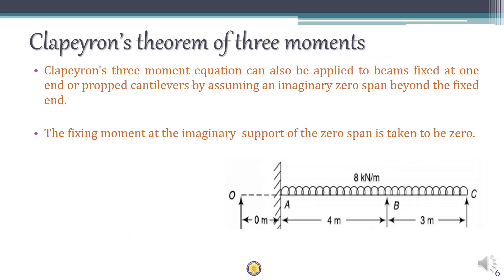It is important to note that Clapeyron's theorem of three moments can also be applied to fixed beams or propped cantilevers, even with a single span. In that case, you assume an imaginary span of zero length beyond the fixed end. In this imaginary span, the length is zero, the loading is zero, and the fixing moment at the imaginary support is also zero.